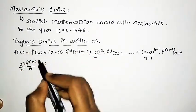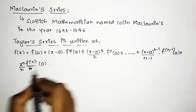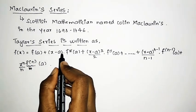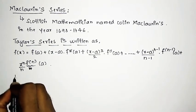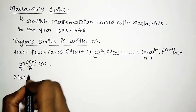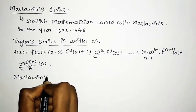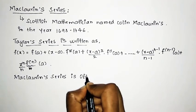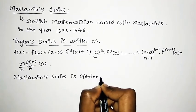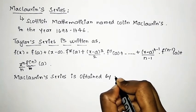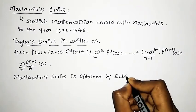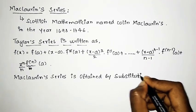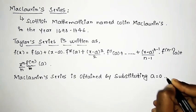To write the Maclaurin series from this Taylor series, we simply replace a with 0. The Maclaurin series is obtained by substituting a equals 0.